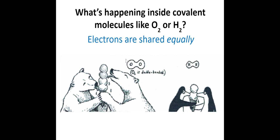Therefore the four electrons in the double bond between the two oxygens are shared equally, so this would be a non-polar molecule. The same thing applies to H2 - you have two weaker penguins representing the hydrogens with a single bond, meaning two electrons represented by two scoops. Since the penguins are equal in strength they share the ice cream equally, so there's no polarity in that bond either.